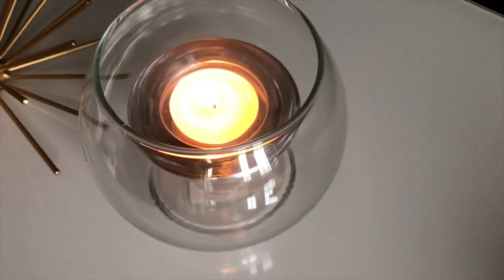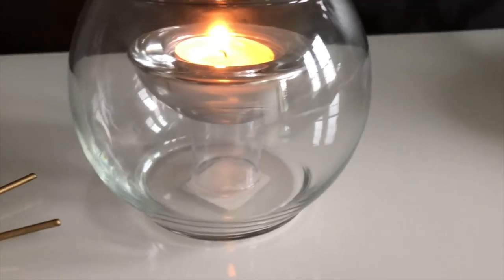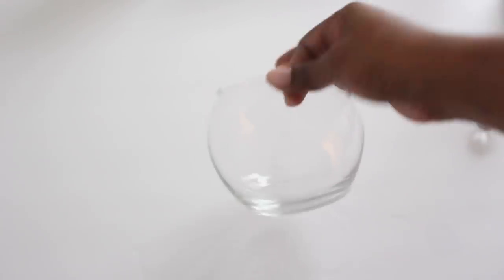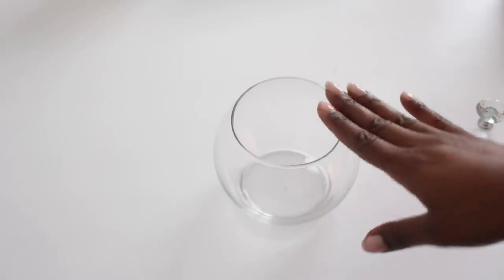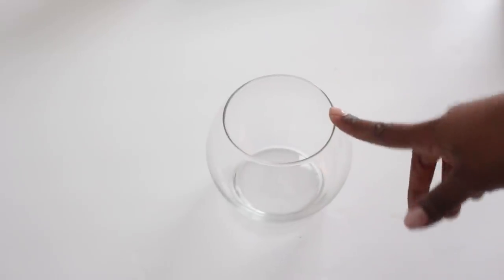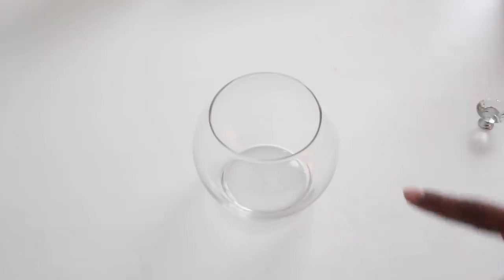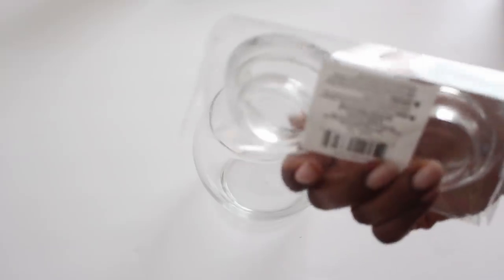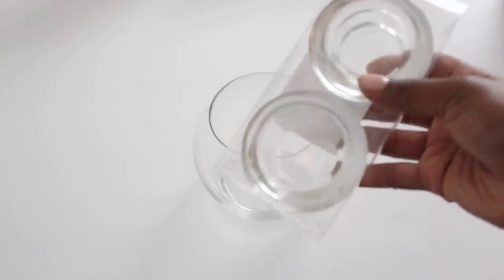The third and last one is a modern floating tea light candle holder. For this project, you will need a bowl—this is the larger size round bowl that Dollar Tree has. They do have two sizes, at least that's what I've seen.